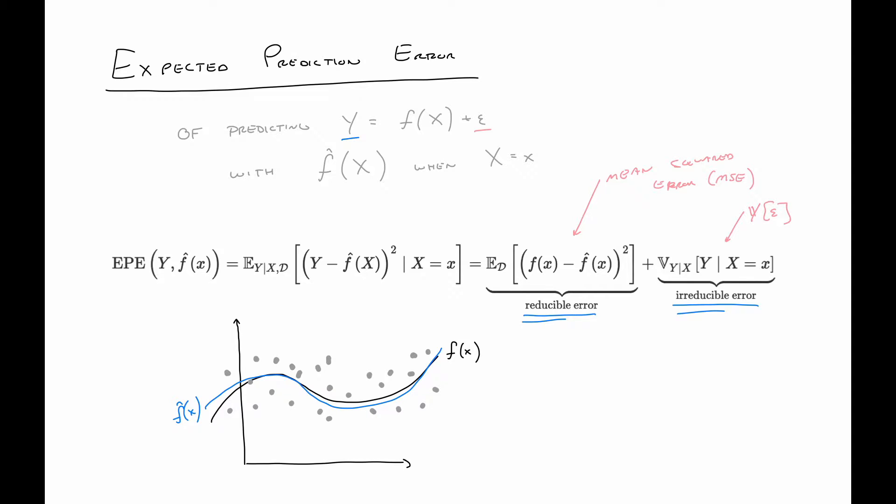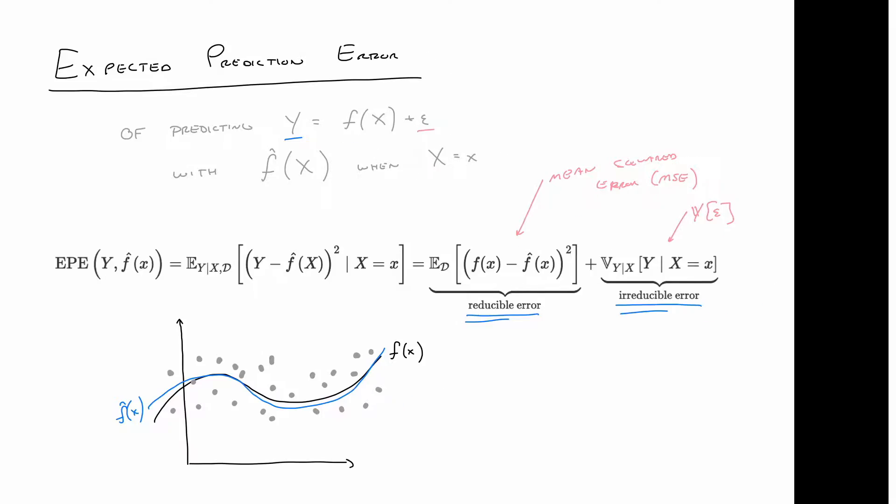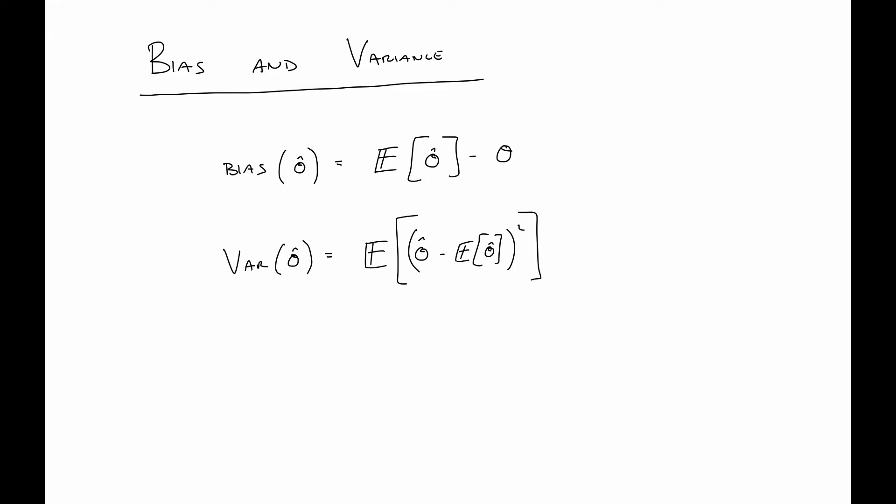Before we go any further, we need to recall some definitions. If we have some estimator theta-hat for some quantity theta, what is the bias of that estimator and what is the variance of that estimator? Hopefully you've seen these definitions before, but let's talk about some intuition behind them.